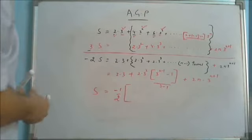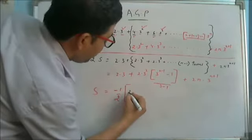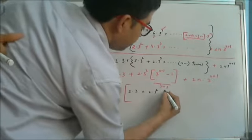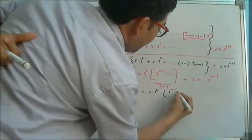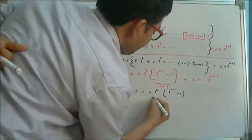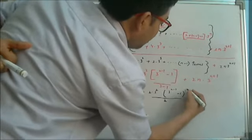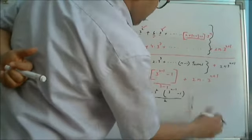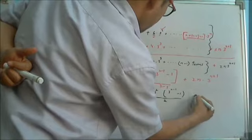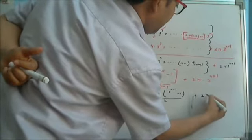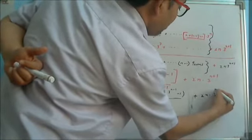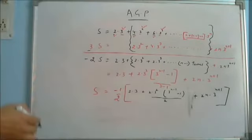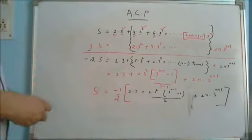So we can get easily the value of S. The sum of the GP is coming out to be −(1/2) of the whole thing. The whole thing is 2×3 + 2×3² ... up to n+1 terms, divided by 2. And this −(1/2) is with everything, plus 2n×3ⁿ⁺¹. So the final value of S is obtained.